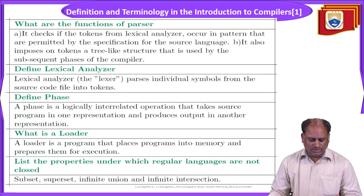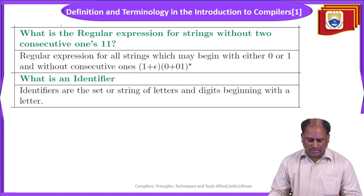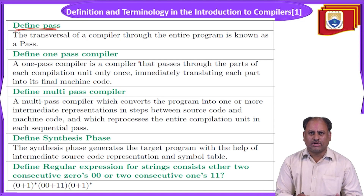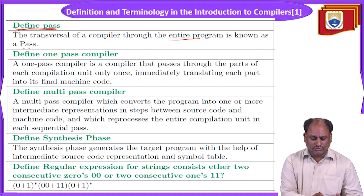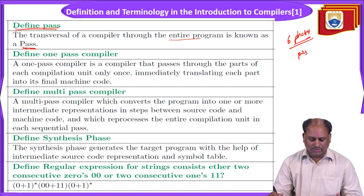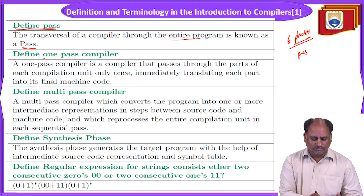Previously we have taken what is the regular expression. Now we define passes — here we are going to traverse various phases of the compiler one by one. In traversing a compiler through the entire program it is known as a pass. There are two types: one pass compiler and multi-pass compiler. Let us see what is meant by each.